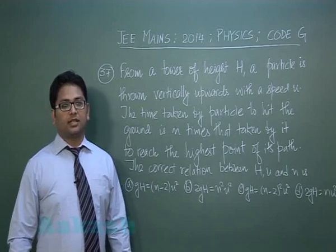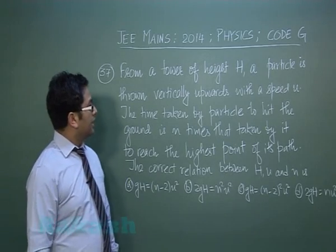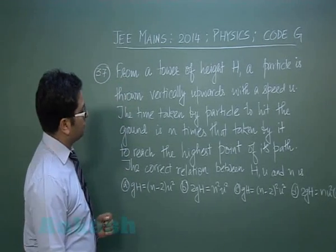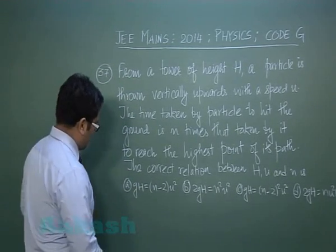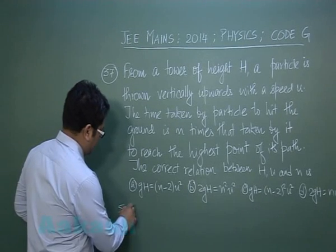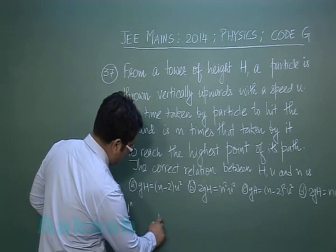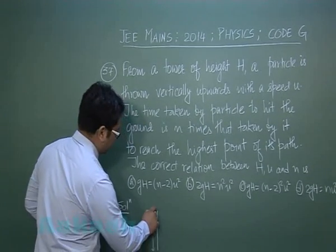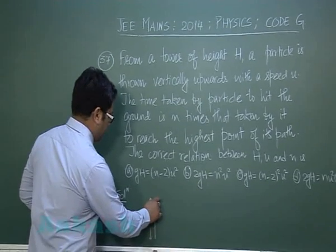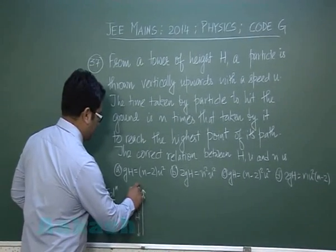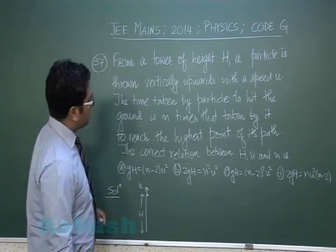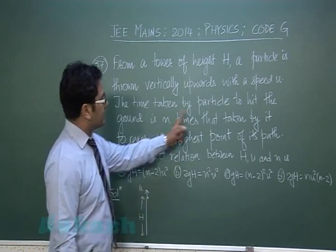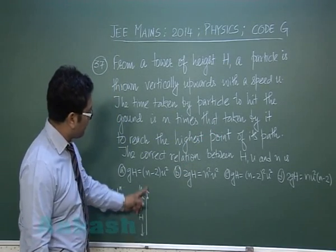Question number 37 is from kinematics. From a tower of height h, a particle is thrown vertically upwards with speed u. The time taken by the particle to hit the ground is n times the time taken by it to reach the highest point of its path.